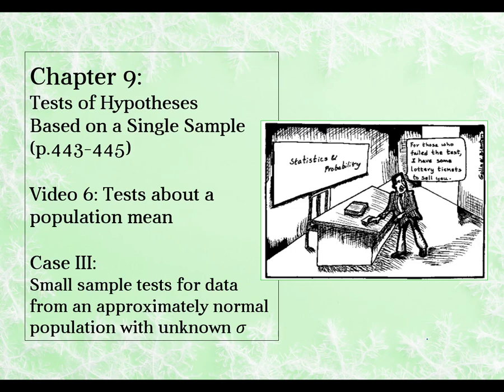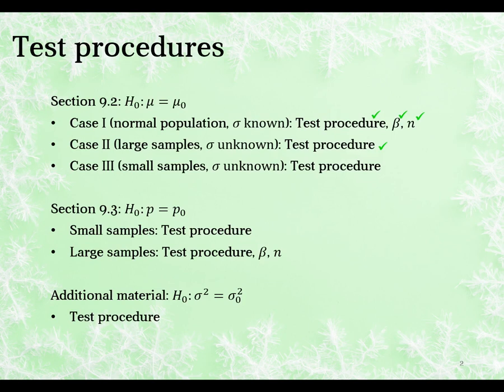In this video, we will look at the last case in section 9.2 of your textbook, which is the case where we have a small sample of data from an approximately normal distribution with an unknown population standard deviation. If we look at the test procedures that we've already looked at, case one was normal population where sigma was known. Then we also looked at case two where we have a large sample where the central limit theorem applied. And now we're moving on to small samples where the central limit won't apply.